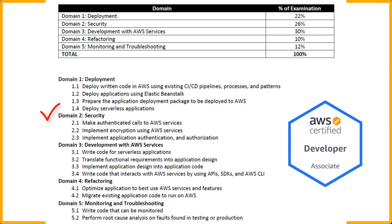Domain two is Security. You'll learn how to make authenticated calls to AWS services, implement KMS encryption, work with AWS Cognito, Secrets Manager, and other services, and also implement application authentication and authorization.